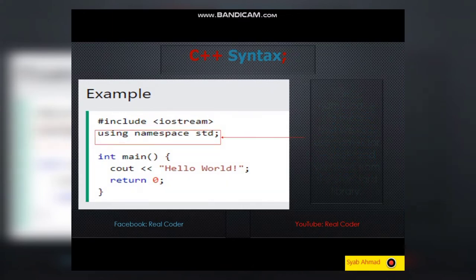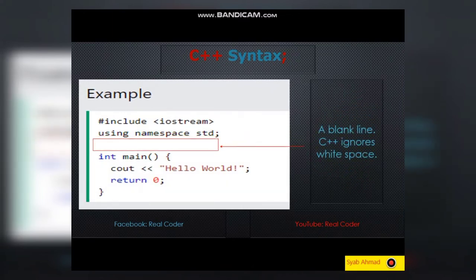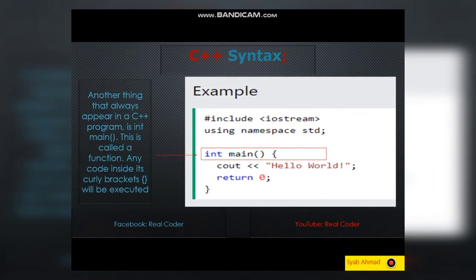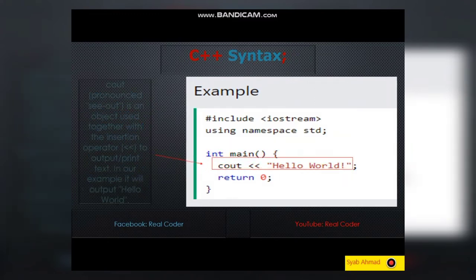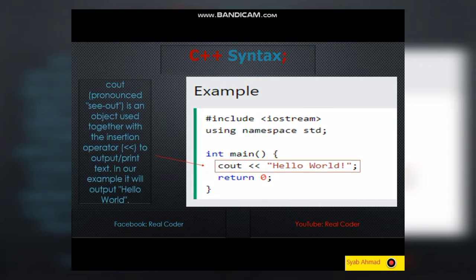A blank line — C++ ignores white space. Another thing that always appears in a C++ program is int main. This is called a function. Any code inside its curly brackets will be executed. Cout, pronounced cout, is an object used together with the insertion operator to output or print text. In our example, it will output Hello World.